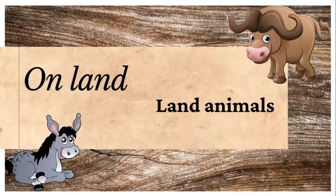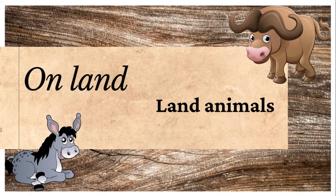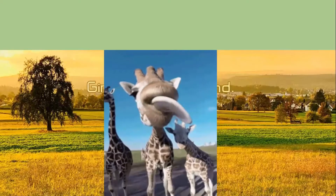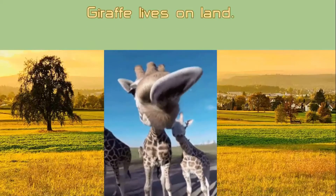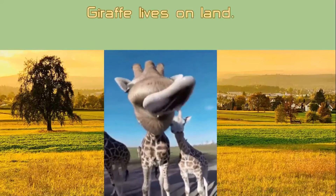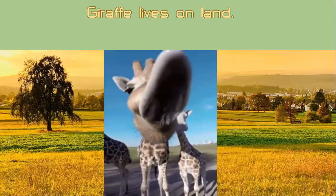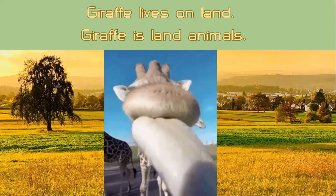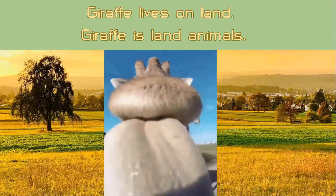And the next type is on land — the animals that live on land. We say land animals. On land ก็คืออยู่บนบกค่ะ. สัตร์ที่อาศัยอยู่บนบกเขาก็จะคือว่าเป็นสัตร์บกก็คือ land animals. What is it? Giraffe. Giraffe lives on land, so giraffe is a land animal.